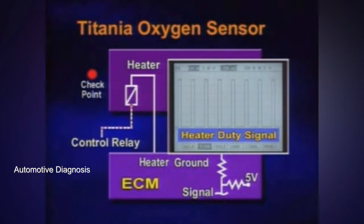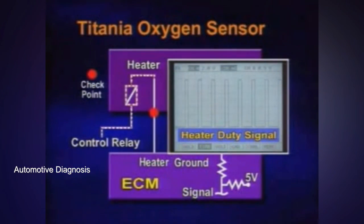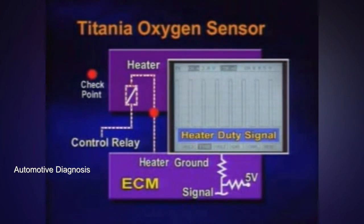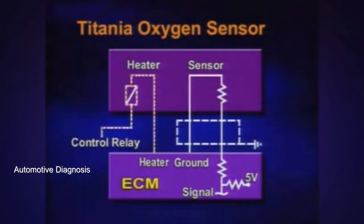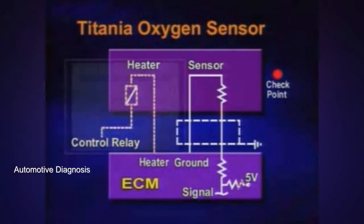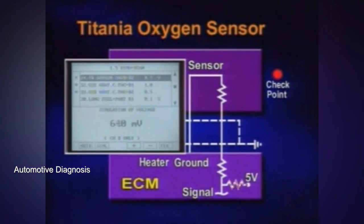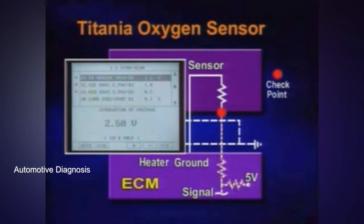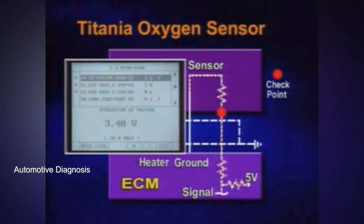As for the oxygen sensor heater check, check the duty signal from the heater control valve. If the waveform is normal but current data is abnormal, check the signal wire using the simulation function of HiScan, and check whether the ECM reads the sensor values correctly.